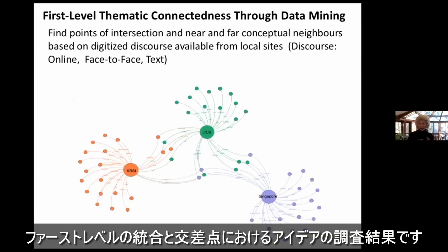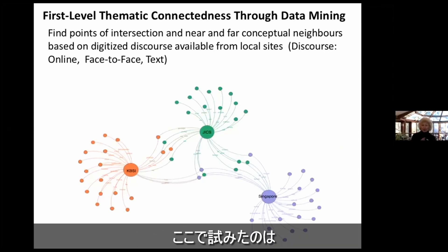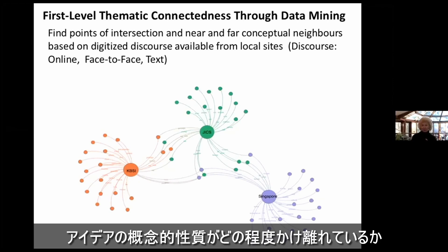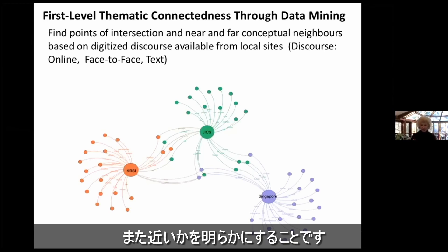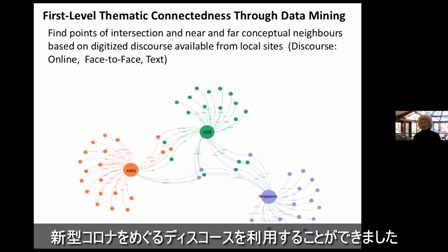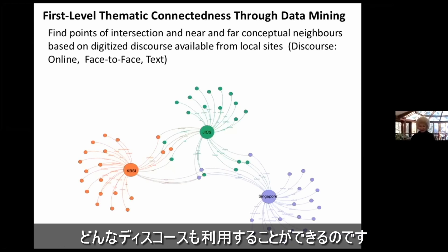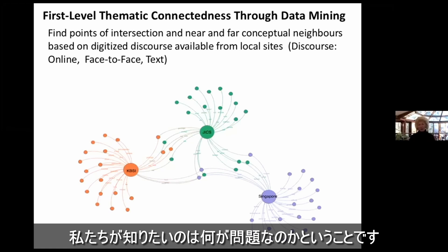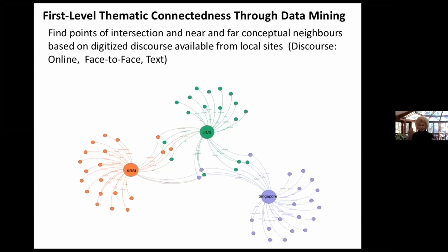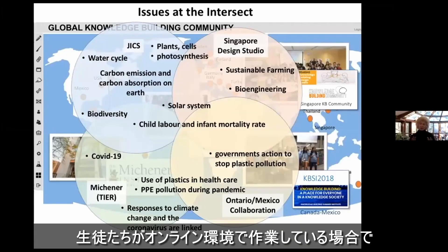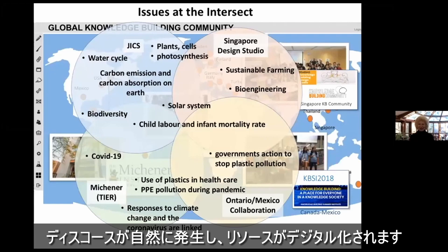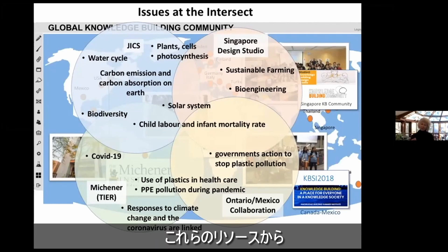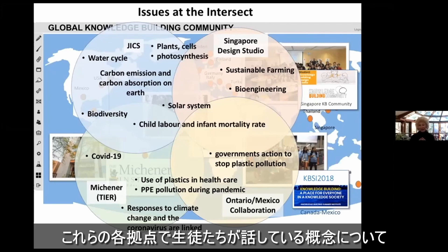For a first level integration and finding ideas at the intersect, we can use data mining. What we're trying to do is find far and near conceptual neighbors through the digitized discourses we have available. We can use online discourse or face-to-face discourse, as long as it's been translated into text. What we want to know is what are the problems and issues being dealt with at these different sites — most conveniently when students work in online environments with naturally occurring and digitized discourses. The data mining will give us some sense of the concepts they are talking about.